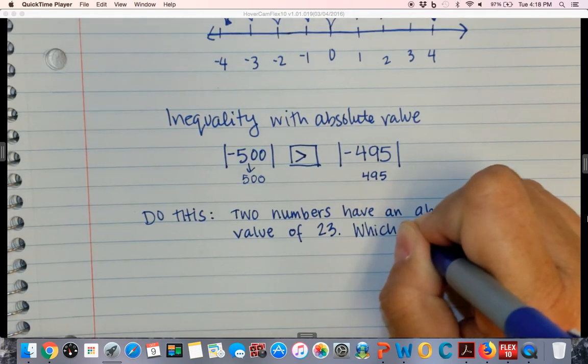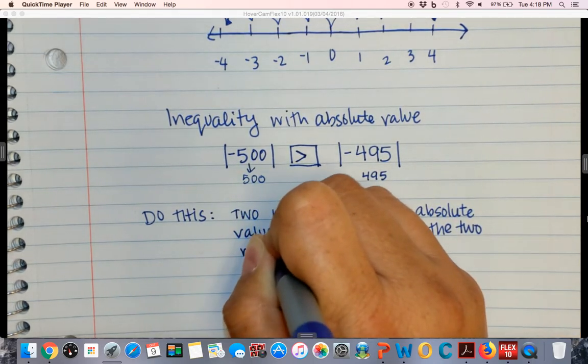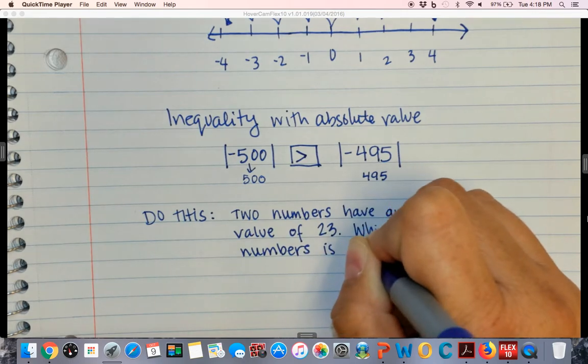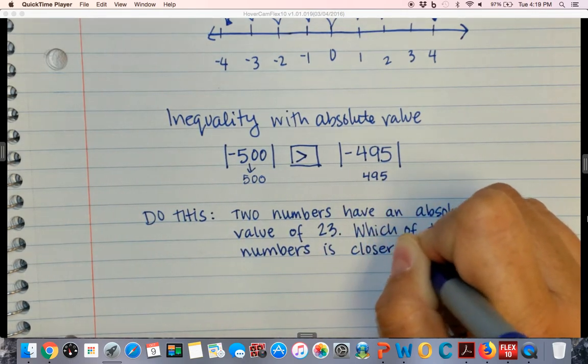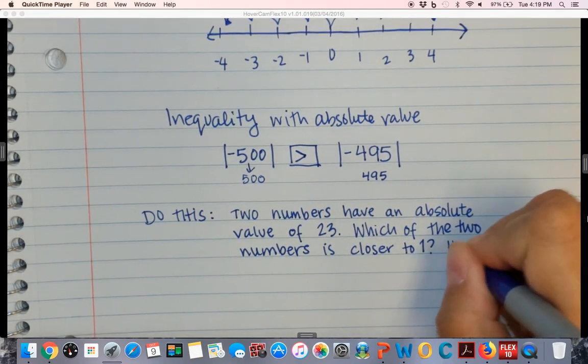Which of the two numbers is closer to one? How do you know?